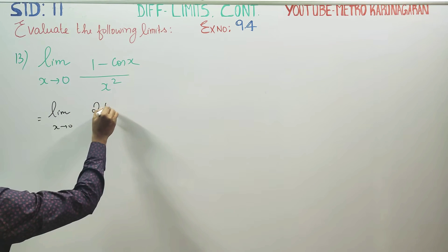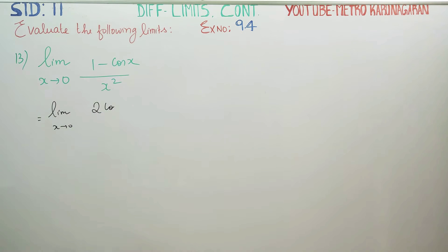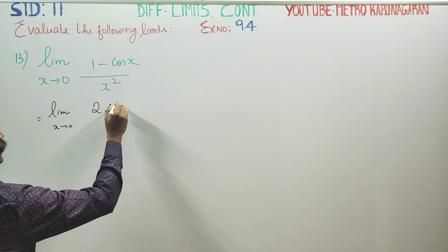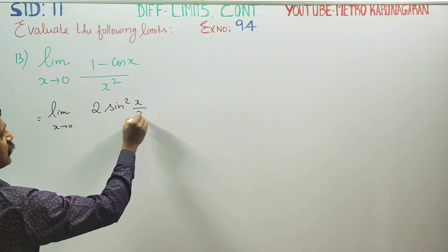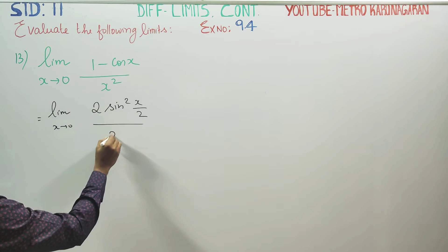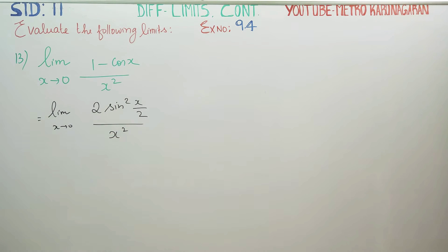1 minus cos x can be written as 2 sin square x by 2, using the sub-multiple angle formula, divided by x square.